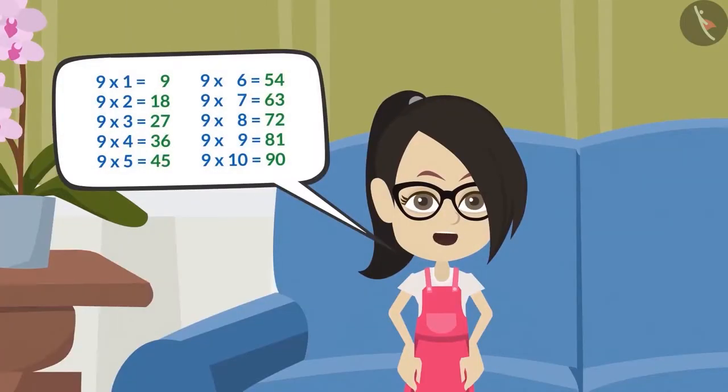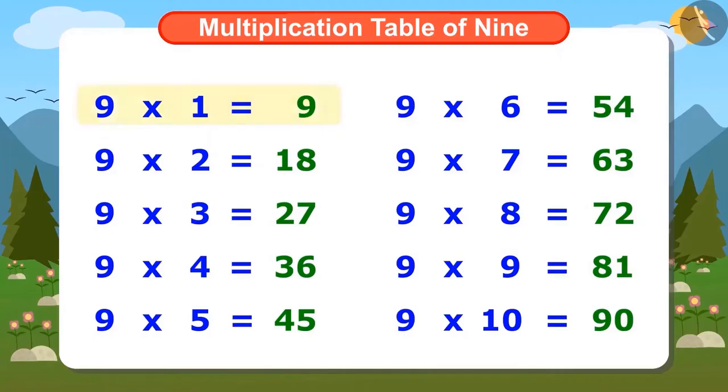Let us learn by singing the multiplication table of 9. 9 1's are 9, 9 2's are 18, 9 3's are 27, 9 4's are 36, 9 5's are 45, 9 6's are 54, 9 7's are 63, 9 8's are 72, 9 9's are 81, 9 10's are 90.